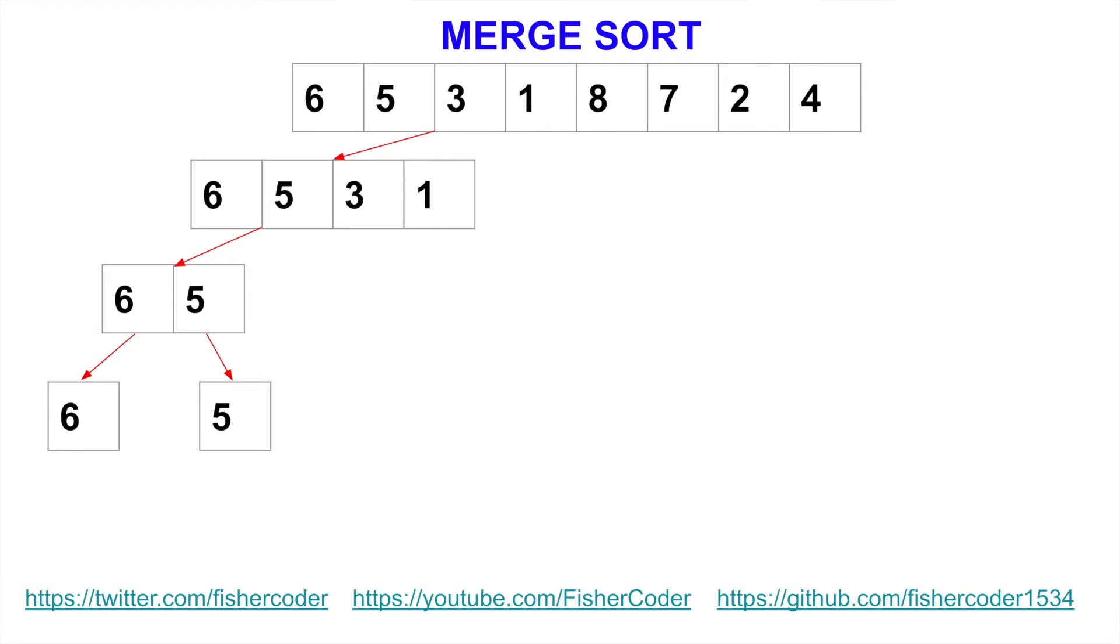Now 6 and 5. At this level, these two items are individualized so that we can compare 6 and 5. We can compare in this case. So what's the right order for 6 and 5? So it should be 5 and 6. So we put them in the sorted order.